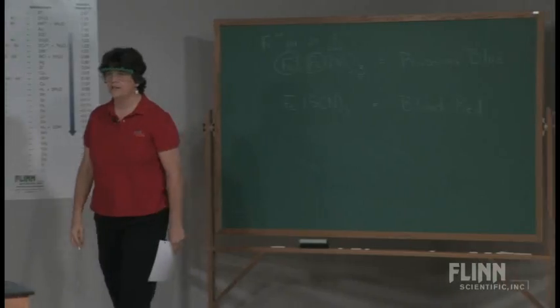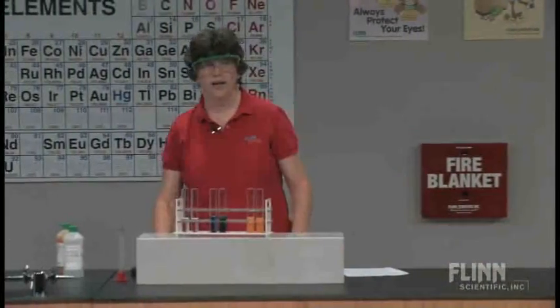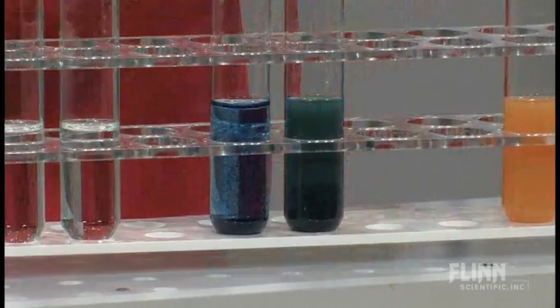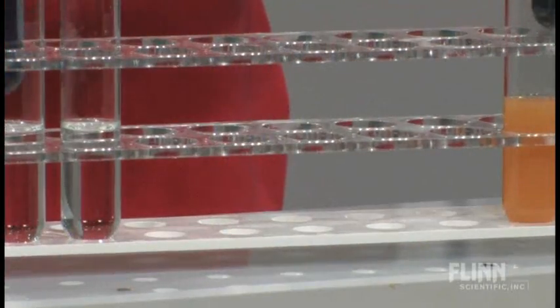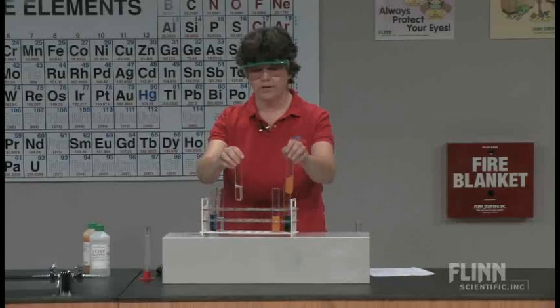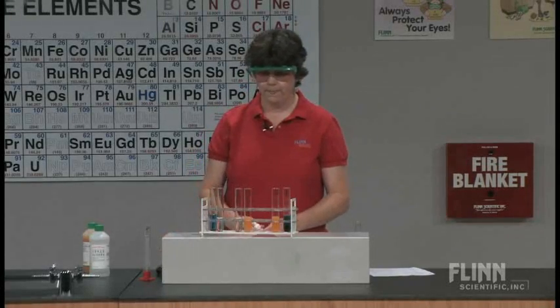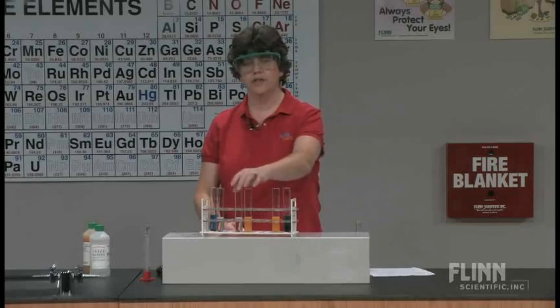So back to our test tubes. The Prussian blue color that we're getting is when we have both ions mixed together in the solution. So let's see what else we can do with this. I'm going to take two more test tubes with my iron two and my iron three. The iron two, which is the colorless, I'm going to add now potassium ferricyanide.